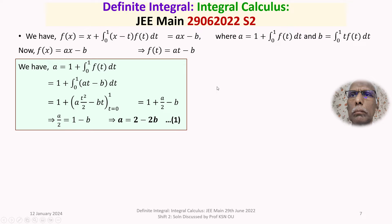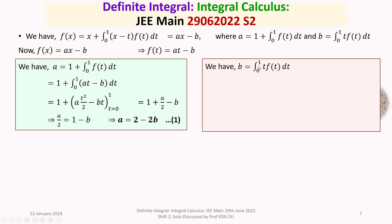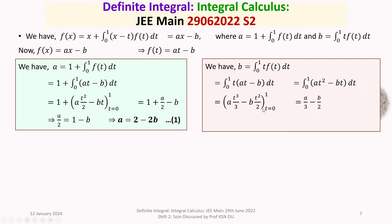To evaluate b: b = ∫₀¹ t·f(t) dt = ∫₀¹ t·(at − b) dt = ∫₀¹ (at² − bt) dt = [at³/3 − bt²/2] evaluated from 0 to 1 = a/3 − b/2. So b = a/3 − b/2, giving b + b/2 = a/3, i.e., 3b/2 = a/3. Therefore a = 9b/2. We call this Equation 2.